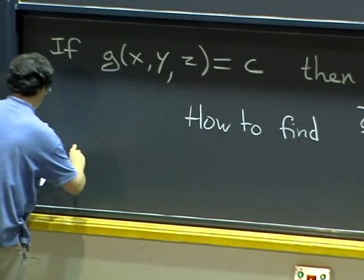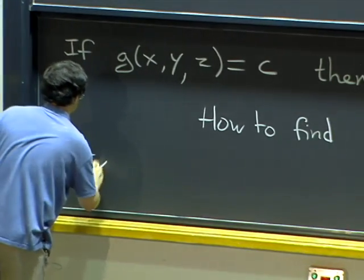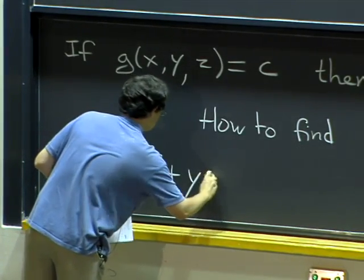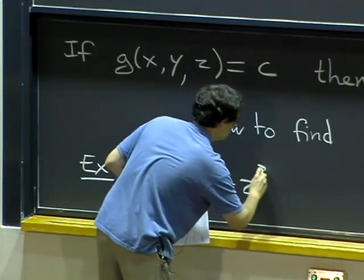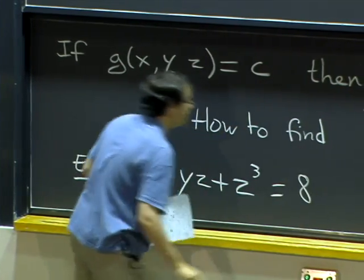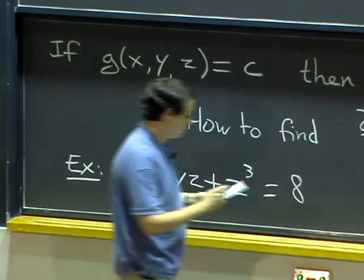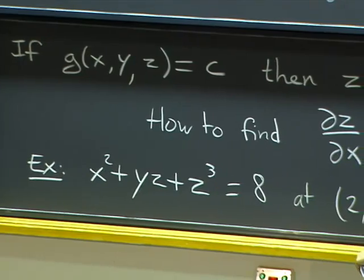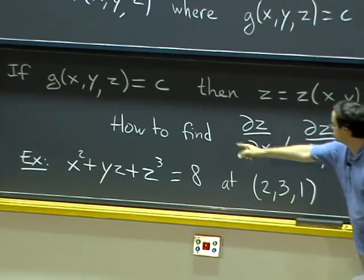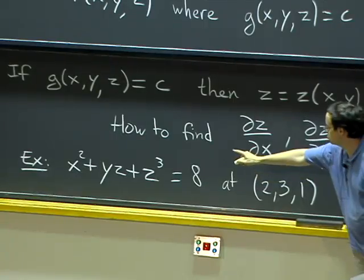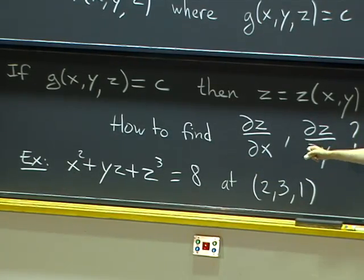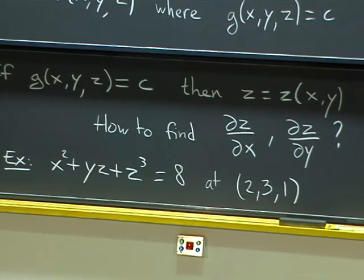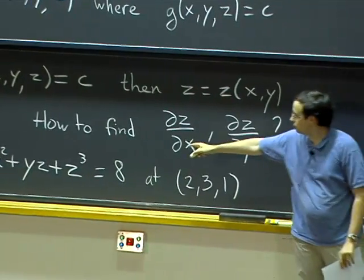Let's do an example. Let's say that my relation is x squared plus yz plus z cubed equals eight. And let's say that I am looking near the point x, y, z equals 2, 3, 1. Let me check: 2 squared plus 3 times 1 plus 1 cubed is indeed eight. But now if I change x and y a little bit, how does z change? Well, of course, I could solve for z in here — it is a cubic equation, there is actually a formula. But that formula is quite complicated; we actually don't want to do that. There is an easier way.